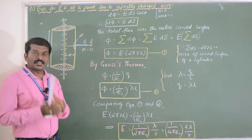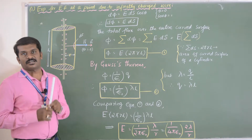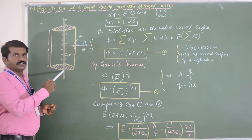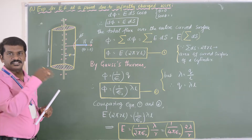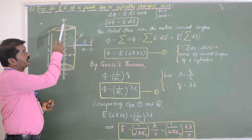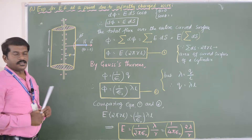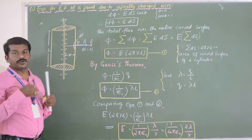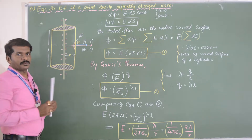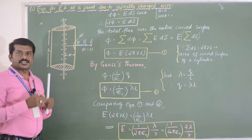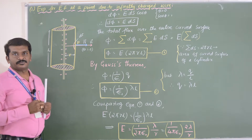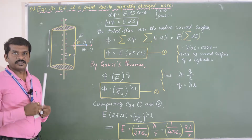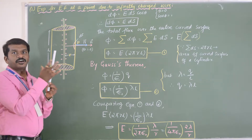To determine the electric field at a point due to an infinitely charged wire, let us consider a uniformly charged conductor of infinite length. Let P be a point at a distance r from the charged conductor, where we have to find the electric field intensity. We assume the Gaussian surface in the form of a cylinder, because the wire is in cylindrical shape.